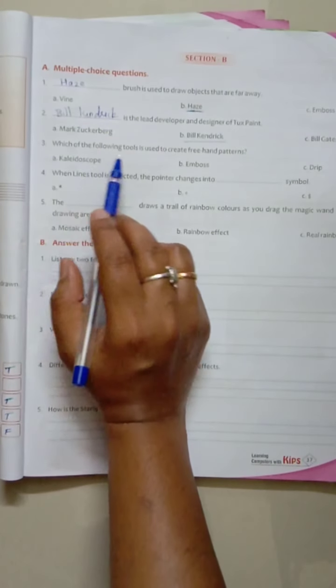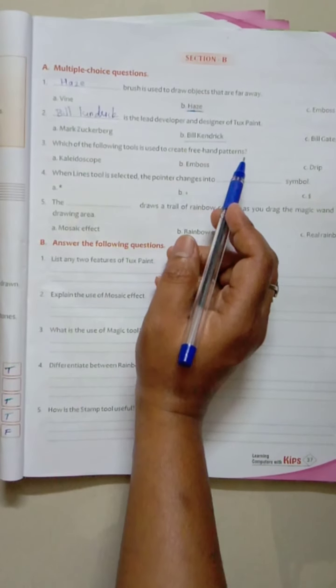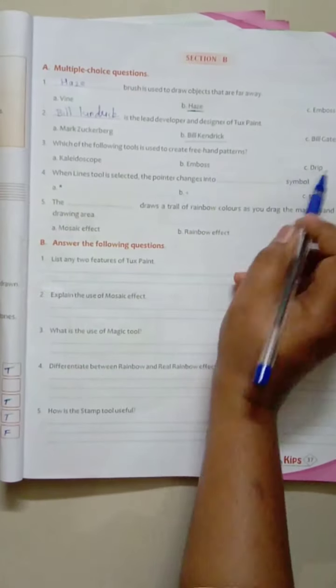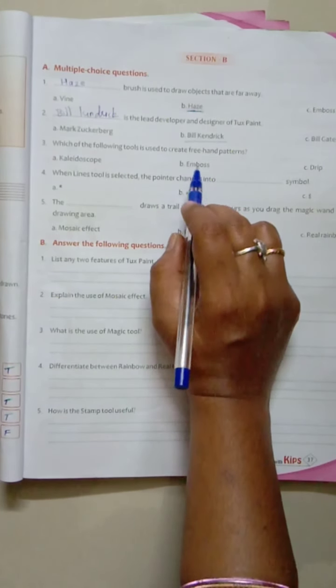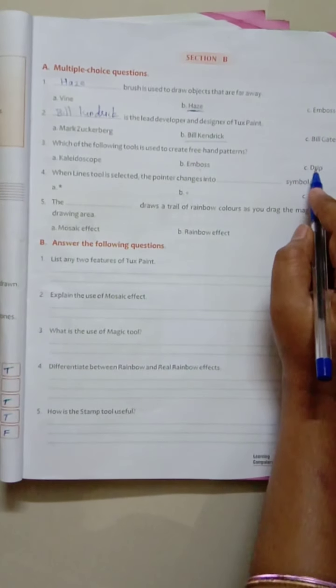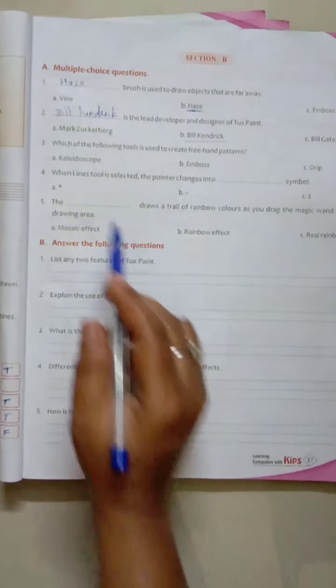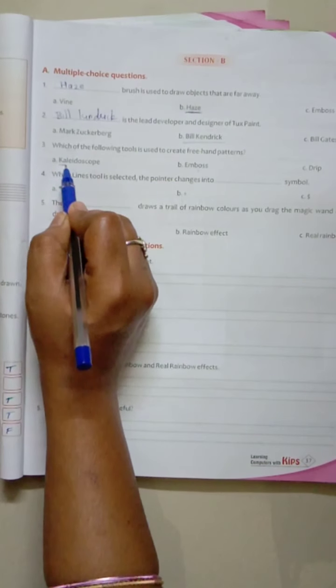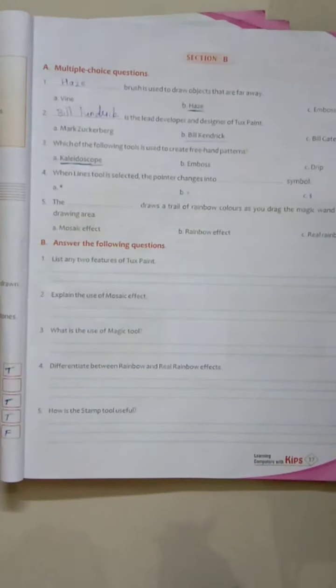Third one. Which of the following tools is used to create freehand patterns? Yes children. Is it Kaleidoscope, Emboss, or Drip? Emboss will give a 3D effect to the particular object. Drip is the option which will have some readymade patterns. But when it comes to Kaleidoscope, it will allow you to draw freehand patterns. So the right answer is Kaleidoscope.